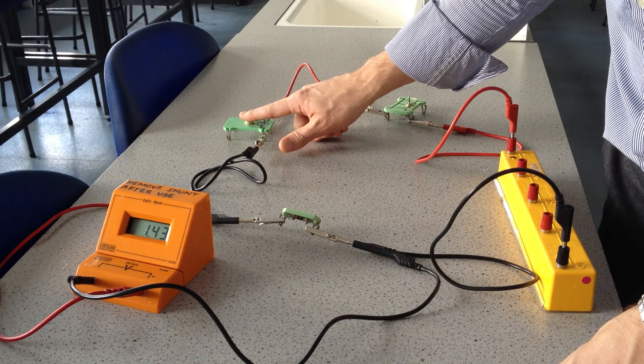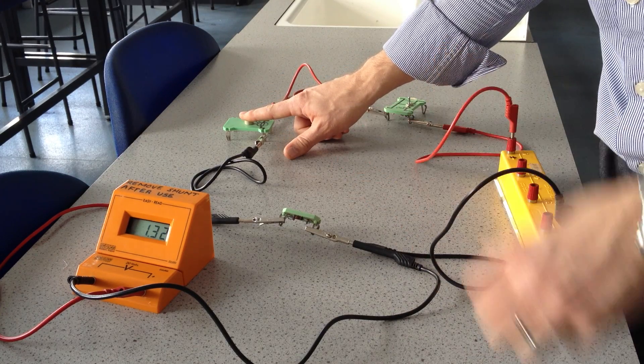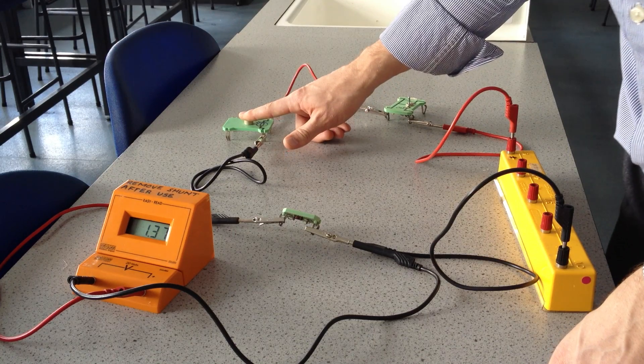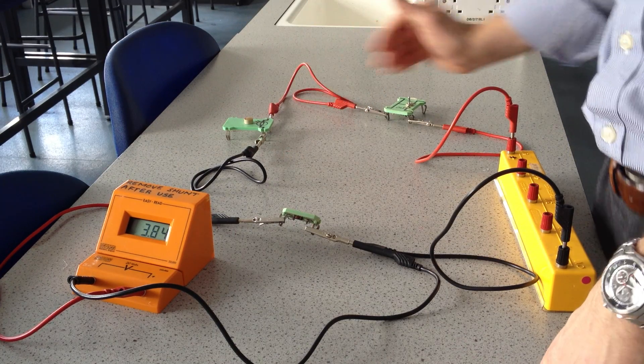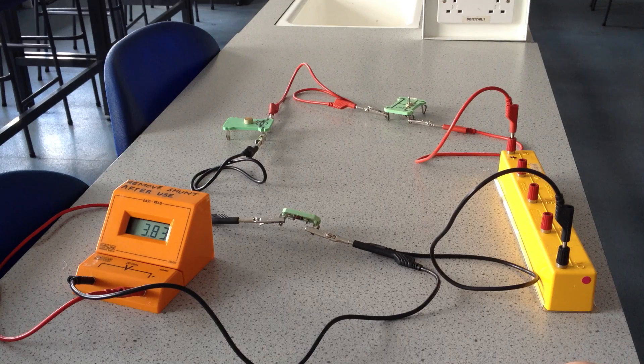Again, decreased light intensity. So it's dark, 1.3 volts roughly. Increased light intensity. It's light, 3.8 volts.